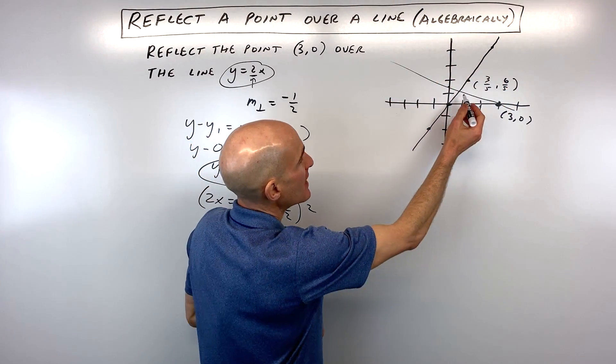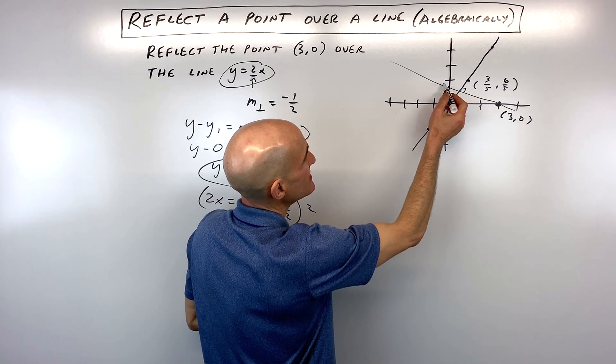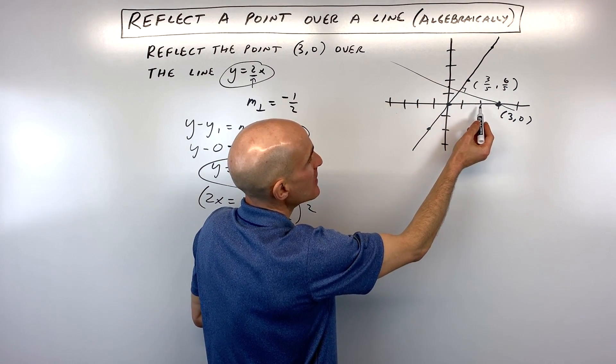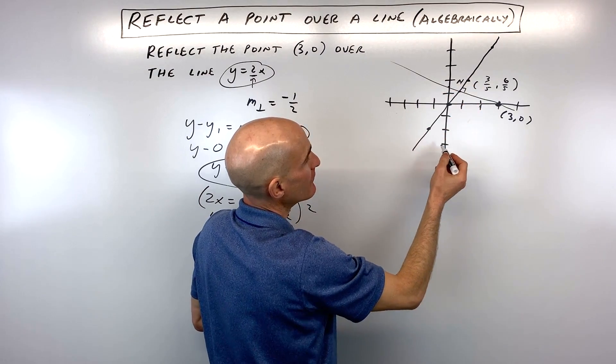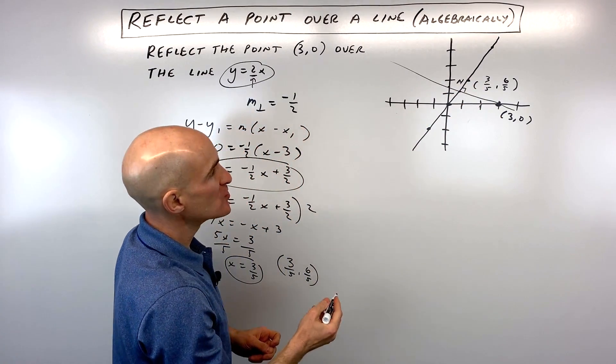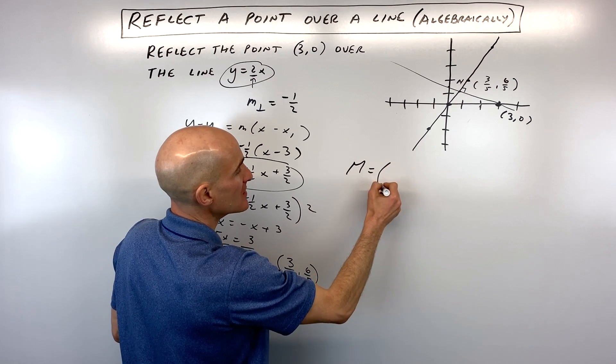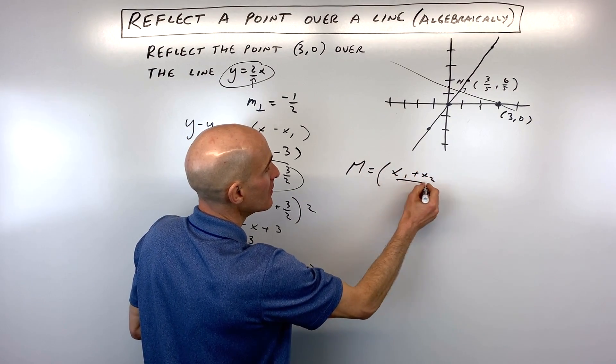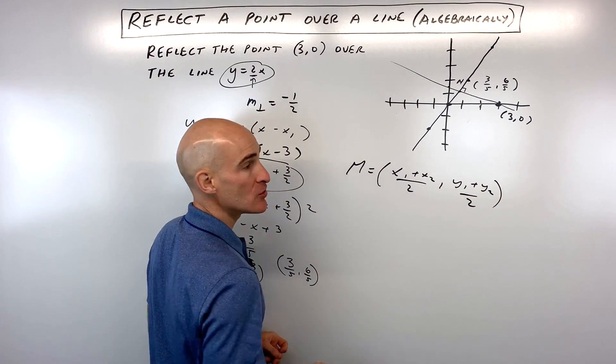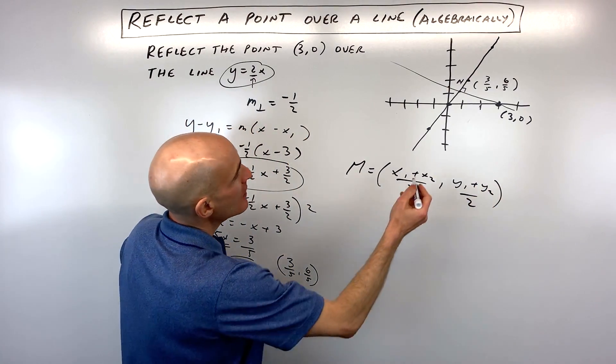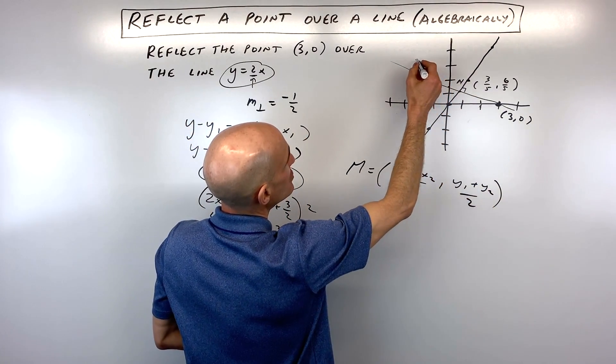Now what you can realize is that when you're folding this point over this line or reflecting it over the line, we know it has to be perpendicular. We also know it has to be the same distance on the other side. So what that means is that this point right here is the midpoint. So what we can do now is use our midpoint formula. Midpoint is the average of the x's and the average of the y's. You add the x's together, divide by 2, add the y's together, divide by 2.